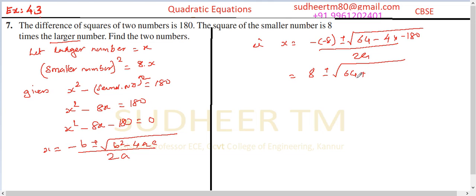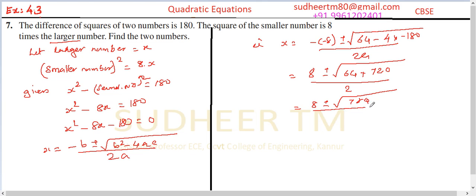This gives 8 plus or minus root of 64 plus 720, divided by 2, which equals 8 plus or minus root of 784, divided by 2, which equals 8 plus or minus 28, divided by 2.